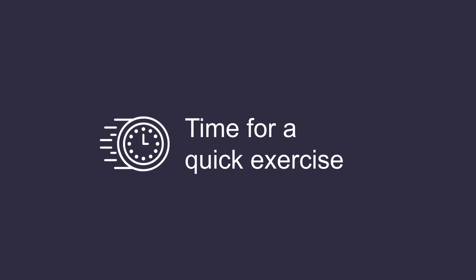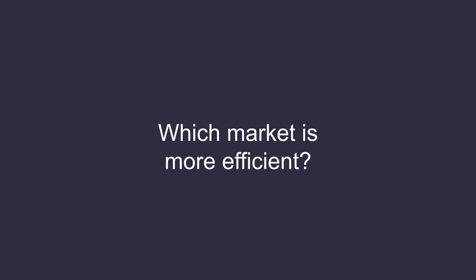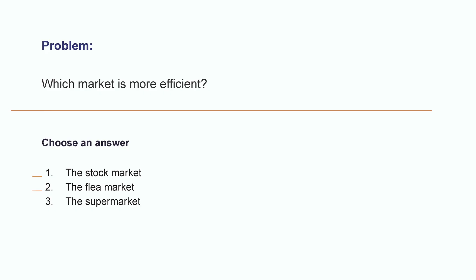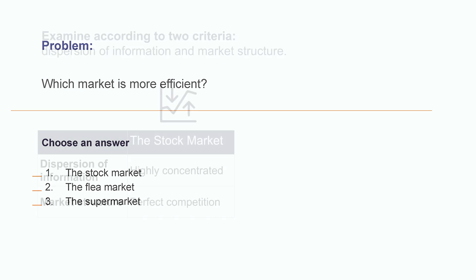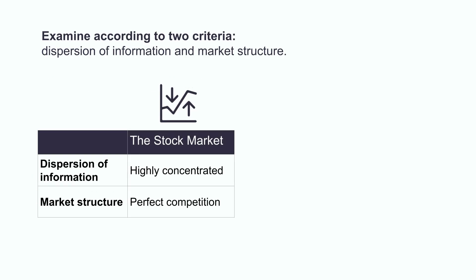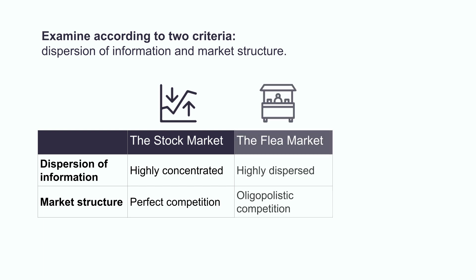Time for a quick exercise. Which market is more efficient: the stock market, the flea market, or the supermarket? In this case, we will envision the supermarket not as a company, but as a market for goods, where several producers display their products. Let's examine those three markets according to our two criteria: dispersion of information and market structure. What about the stock market? Information is highly concentrated — I can access it instantly on a computer terminal. And the market structure is very close to perfect competition, with many traders.